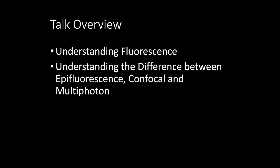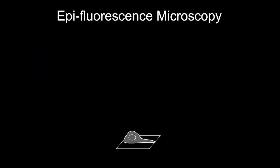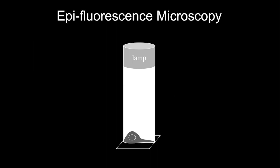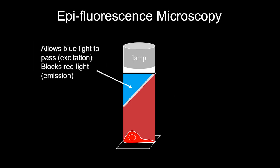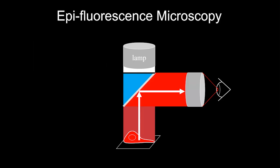Now let's talk about the microscopy techniques most of you have probably used. The first is epifluorescence microscopy — these are everywhere on campus and cheap to use. You start with a lamp that emits white light. You put an excitation filter in to select, say, blue light. The fluorophores in the cell get excited and emit, say, red light, which goes back up and is redirected by a dichroic mirror so you can see it with your eye or camera.